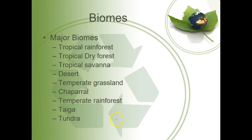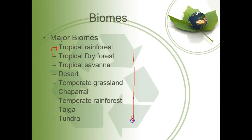If we talk about biomes, you've probably discussed them before in your science curriculum. These should all ring a bell: tropical rainforest, tropical dry forest — basically the same as tropical rainforest but with less annual rainfall — tropical savanna, desert, temperate grassland, chaparral, temperate rainforest, taiga, and tundra. As you go toward the poles, it typically gets colder, with a few exceptions.